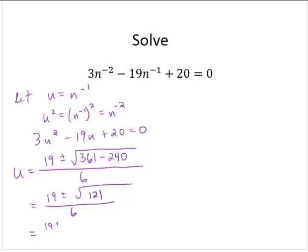So that's 19 plus or minus 11 over 6. So then u would equal 19 minus 11 over 6. That's 8 over 6. That's 4 thirds.